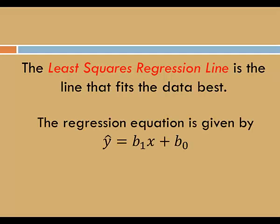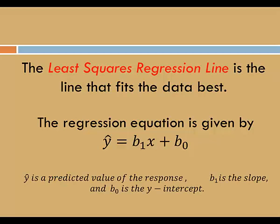The regression equation is given by y hat equals b sub 1 times x plus b sub 0. Rather than say b sub 1, we'll just say b1. And rather than b sub 0, it's common to say b0. That's n-a-u-g-h-t. In this equation, y hat is a predicted value of the response variable. b1 is the slope and b0 is the y-intercept. This is an equation in slope-intercept form.